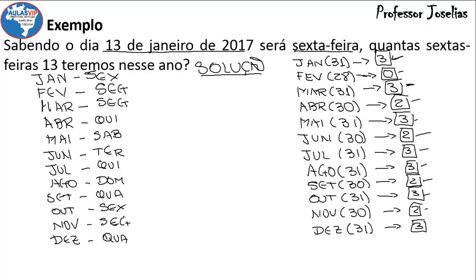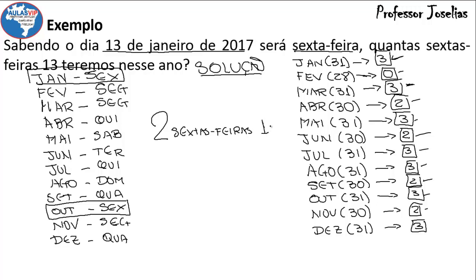A pergunta foi: em 2017, quantas sextas-feiras 13 teremos? Nós temos uma sexta-feira já em janeiro. E o dia 13 aparece numa sexta-feira também em outubro. Em janeiro e outubro. Portanto, nesse ano de 2017, teremos duas sextas-feiras 13. O importante foi analisar esse resto da divisão. Nós já vimos que em 2017 teremos duas sextas-feiras 13.